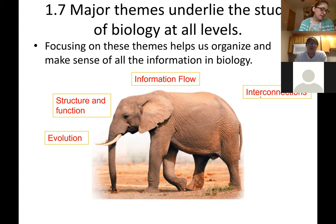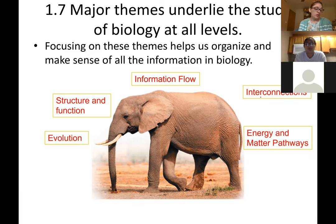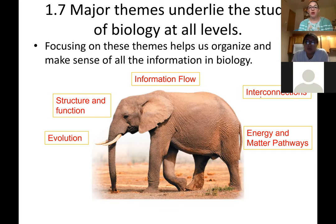Interconnectedness looks at the interactions between an elephant and other organisms in its area, and between the elephant and non-living things like soil, water, and weather - all of those factors are interconnected with the life of that organism. Energy and matter: elephants have to forage constantly throughout their day to maintain 70,000 calories - just to maintain their body weight. Organisms take in energy, convert it to something they can use, and then expel energy - we'll talk about this more in Chapter 4.